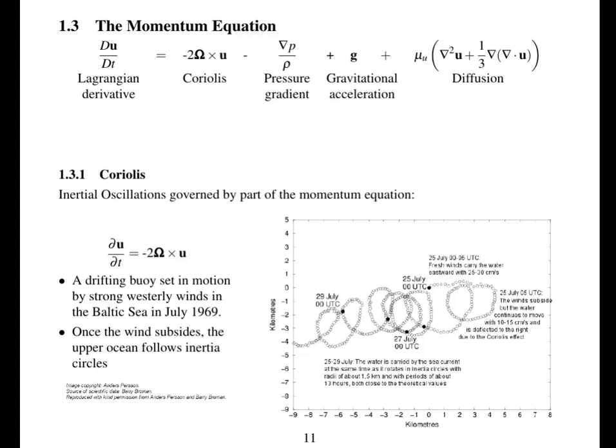Now we're going to look at the momentum equation. And the momentum equation again has got the Lagrangian derivative. So that's rate of change of u, the velocity at a point, plus u dot grad u. So that's the movement of velocity by velocity. And then there's the Coriolis term, the pressure gradient term. So pressure gradients cause acceleration, gravitational acceleration and diffusion.